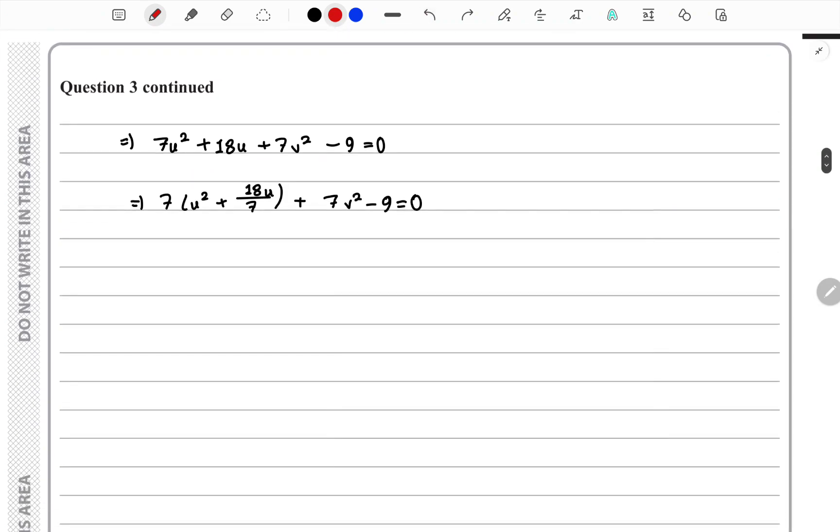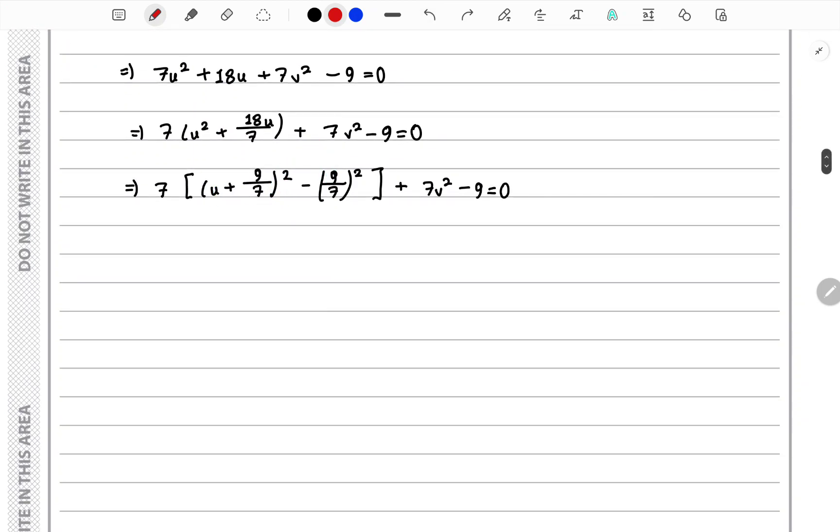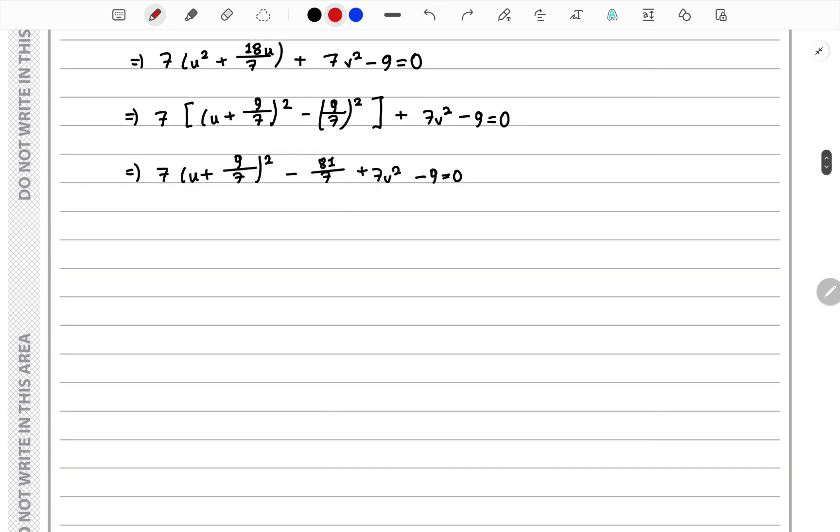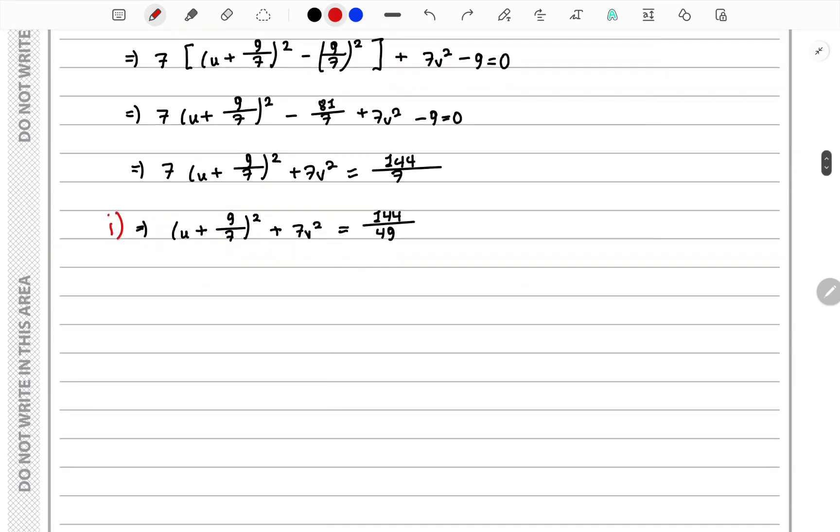At first we need to take 7 common and we get this. We compute it in such a way that we get the equation of a circle in terms of u and v. So this is the equation of the circle.